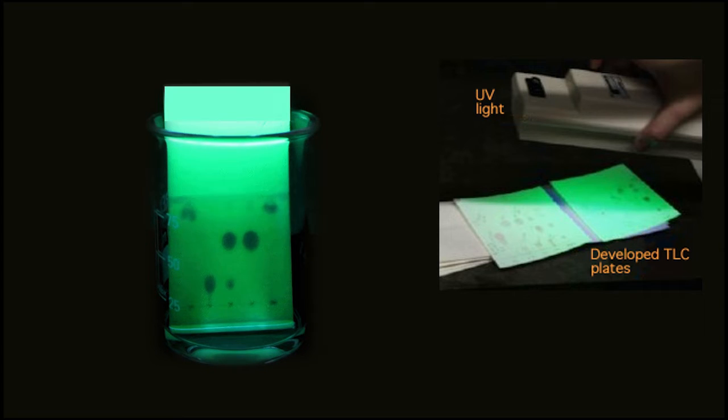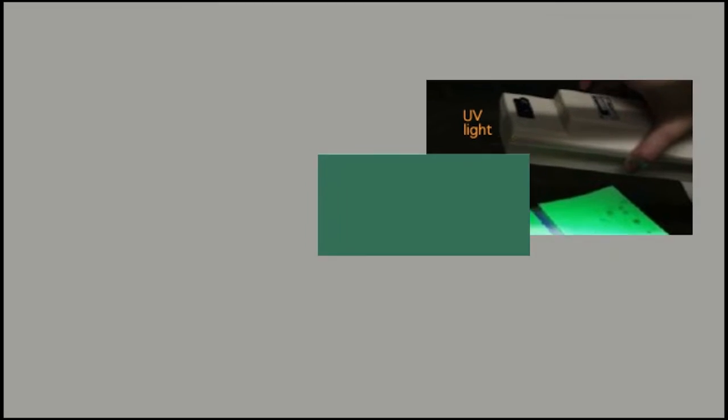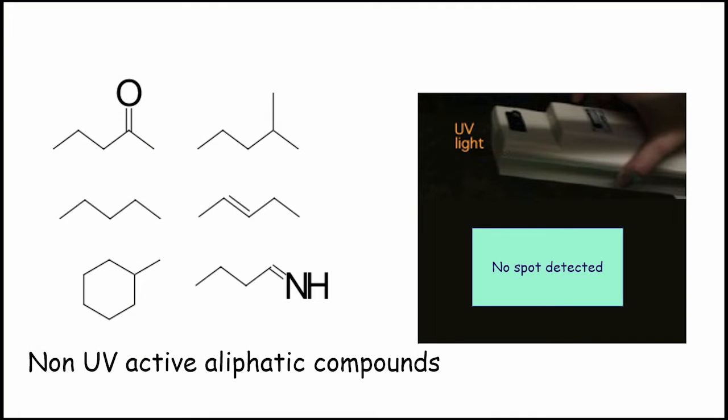If your starting material or your product is not UV active, then you can't see them under UV chamber and hence you can't use this technique. Now, to deal with this situation, the staining agents come into picture. But before learning about staining agents, let's learn about UV active and inactive molecules.